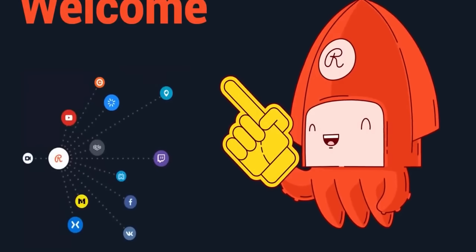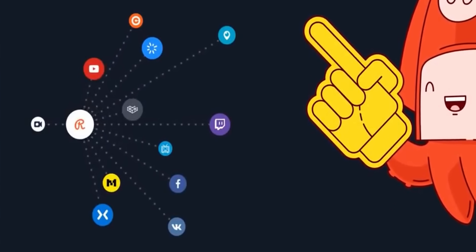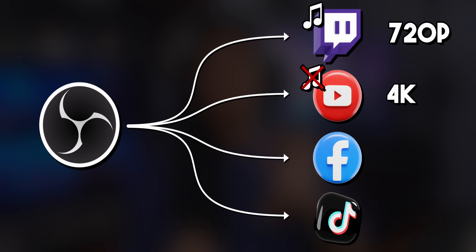This isn't a service like Restream.io where you need to send your stream to a middleman server and then they mirror your stream to your selected platforms. This plugin sends your stream directly to each platform, so you will need to have a faster internet connection. But as long as your connection is fast enough, you can stream to like five Twitch accounts, six YouTube accounts, three TikTok accounts. The only limitation will be how fast your internet is.